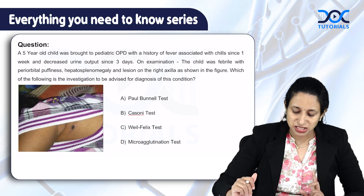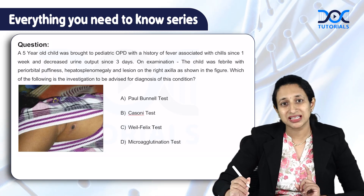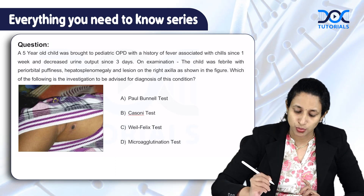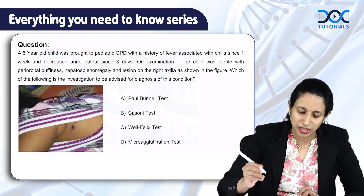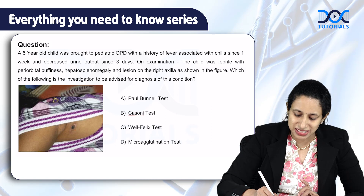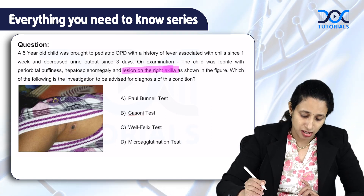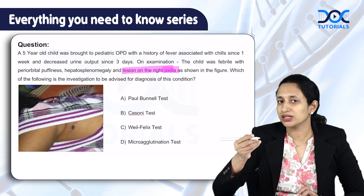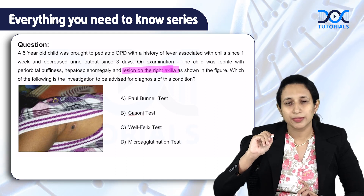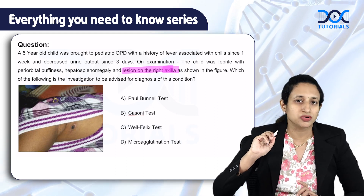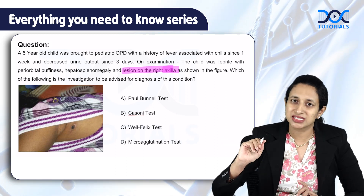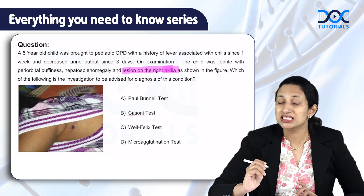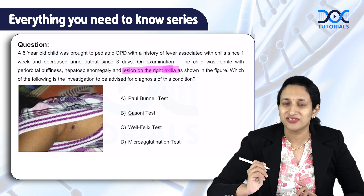This is not something you can miss. Coming to the diagnosis, the diagnostic test of choice from the given options is what is known as the Weil-Felix test. From the history, the most important finding is the lesion seen on the right axilla. Though this is not very consistent with the triad usually associated with scrub typhus, remember that the typical triad of scrub typhus is only seen in 40 to 50 percent of cases. The investigation done in suspected cases of scrub typhus from the given options is the Weil-Felix test.